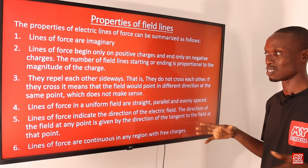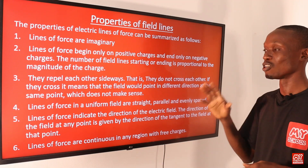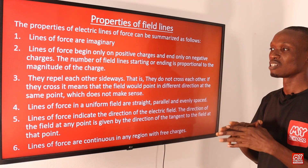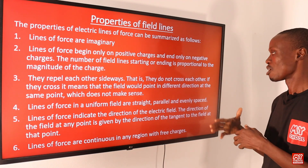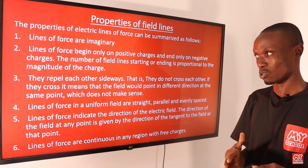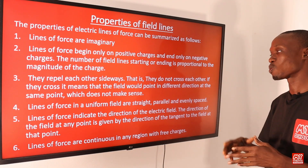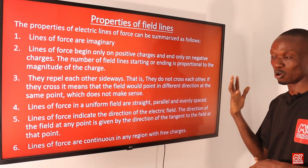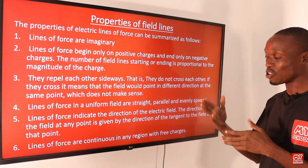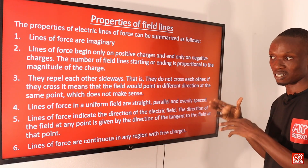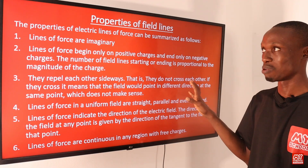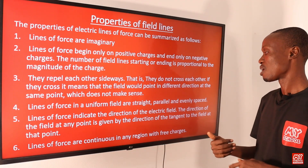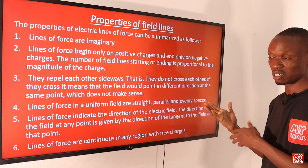Third, lines of force repel each other sideways — that is, they do not cross each other. If they did cross, it would mean the field would point in different directions at the same point, which does not make sense. Fourth, lines of force in a uniform field are straight, parallel, and evenly spaced, as we have seen earlier.